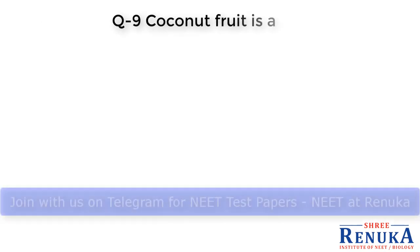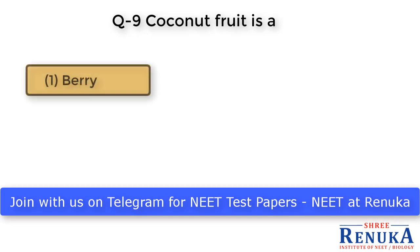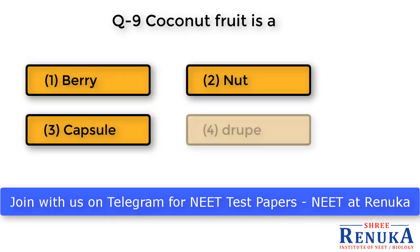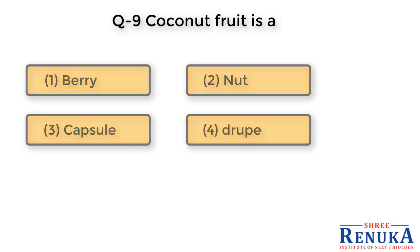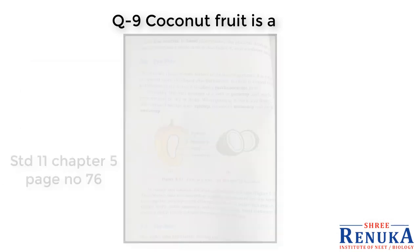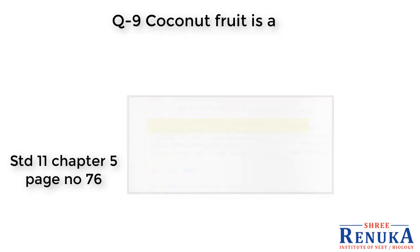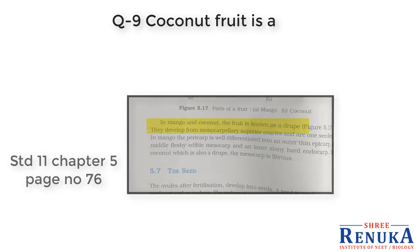Question 9: Coconut fruit is an example of drupe. As stated in the Class 11 NCERT textbook, Chapter 5, page 76, it is clearly mentioned that coconut fruit is an example of drupe.